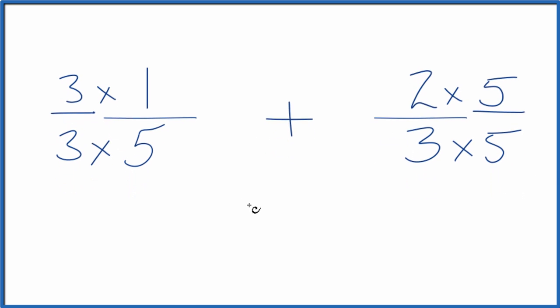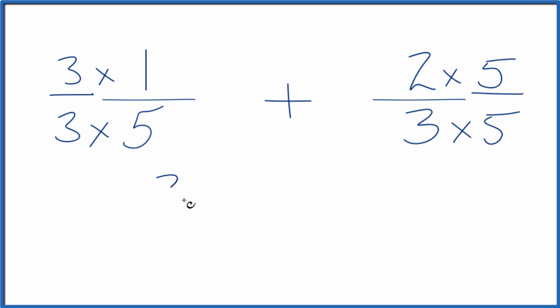So when we do this, what we end up with is 3 times 1 is 3. 3 times 5 is 15. And then 2 times 5 is 10. And 3 times 5 is 15.